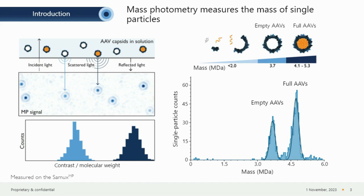The contrast generated by each individual single particle — how dark the center becomes versus lighter surroundings — depends on scattering capabilities. The more scattering we see, the bigger and more optically dense the particle is. Both parameters directly correlate with molecular weight. By analyzing the contrast and performing molecular weight calibration, we can directly determine the molecular weight of respective particles. The outcome of a mass photometer is a mass histogram, with counts on the y-axis and contrast on the x-axis, which converts to molecular weight of single particles in solution.